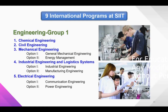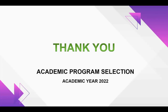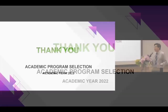We have nine programs divided into three groups. Engineering group one includes chemical engineering, civil engineering, mechanical engineering, industrial engineering and logistics systems, and electrical engineering. Engineering group two includes computer engineering and digital engineering. The third group is the management group, which has two programs: management technology and engineering management. That is all the information I would like to share today. Thank you very much.